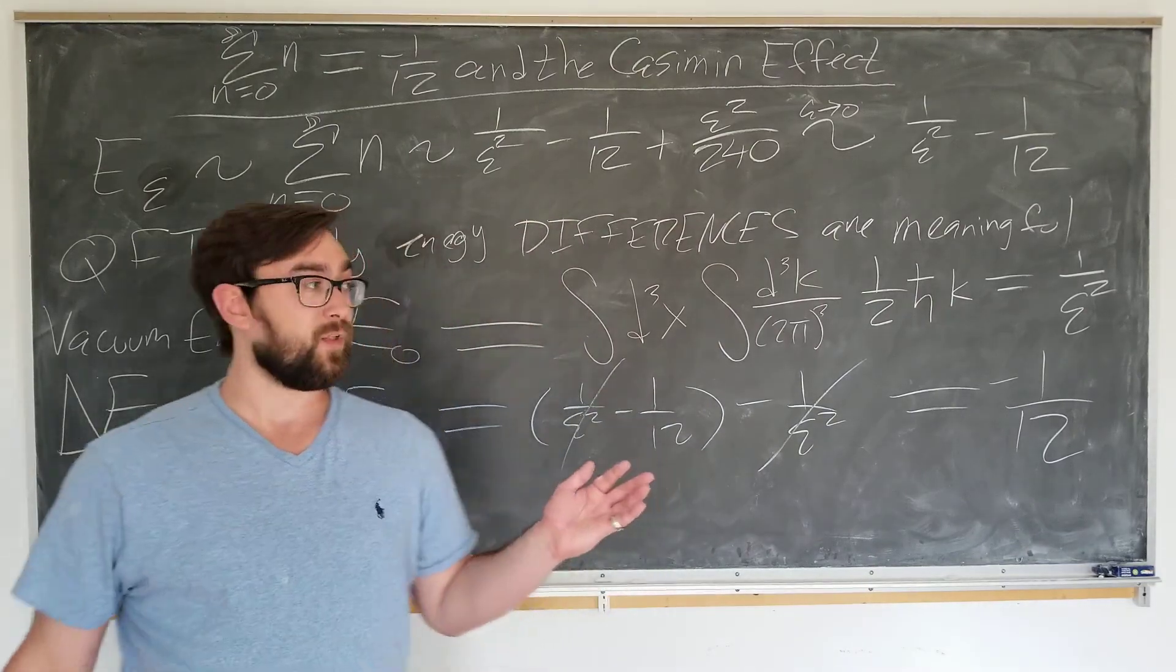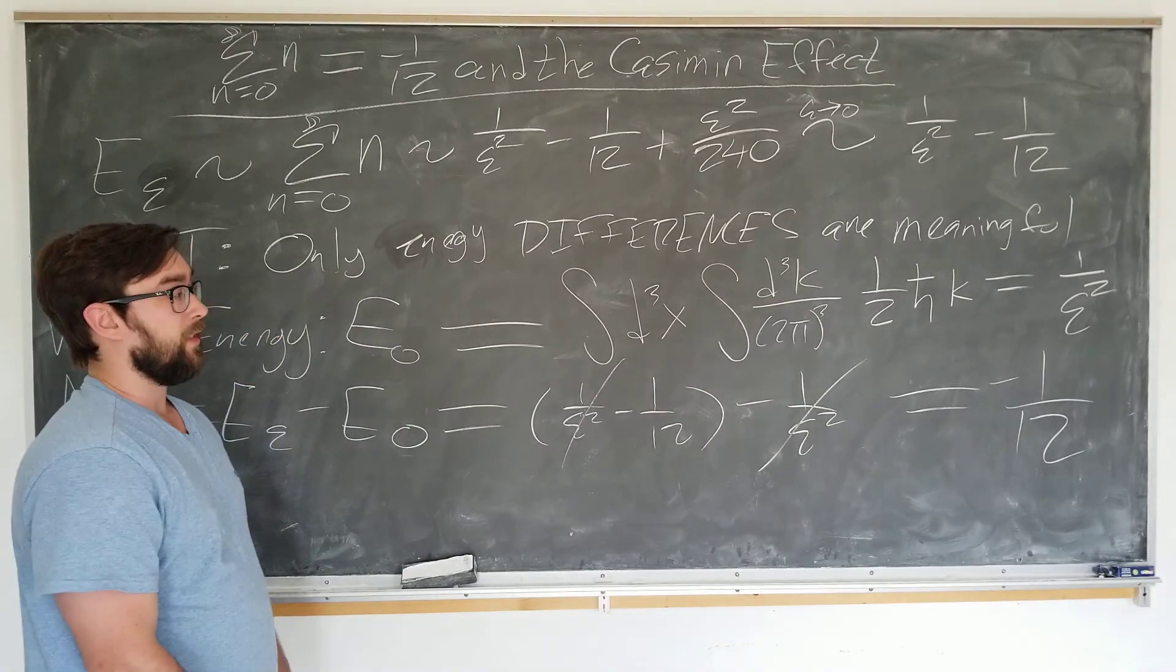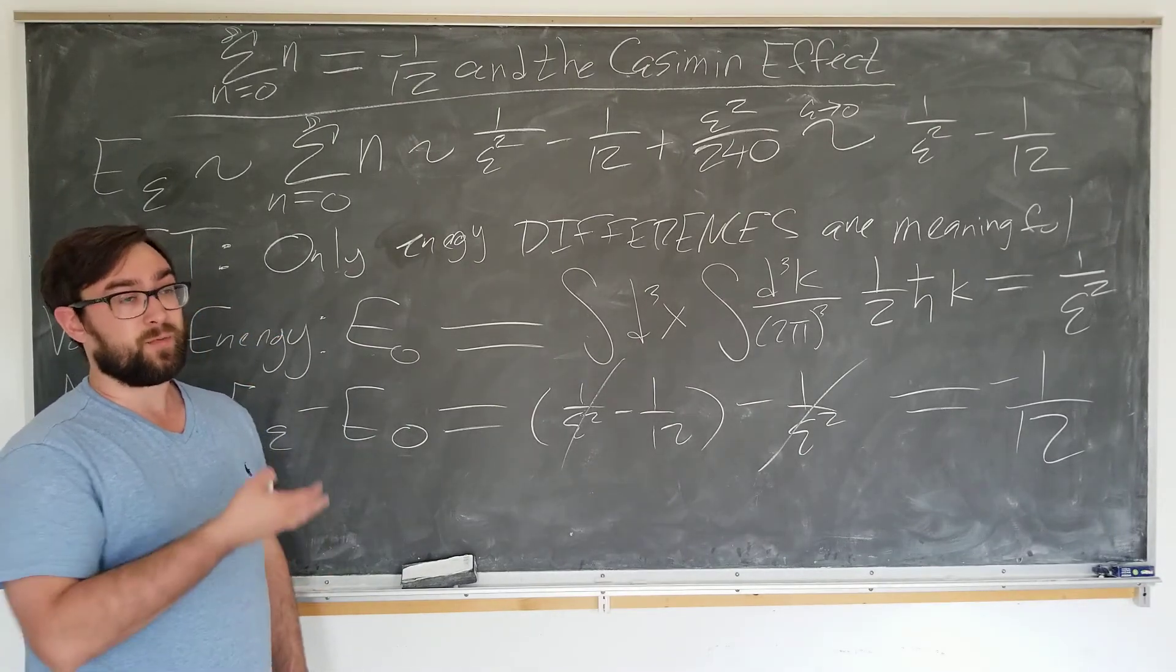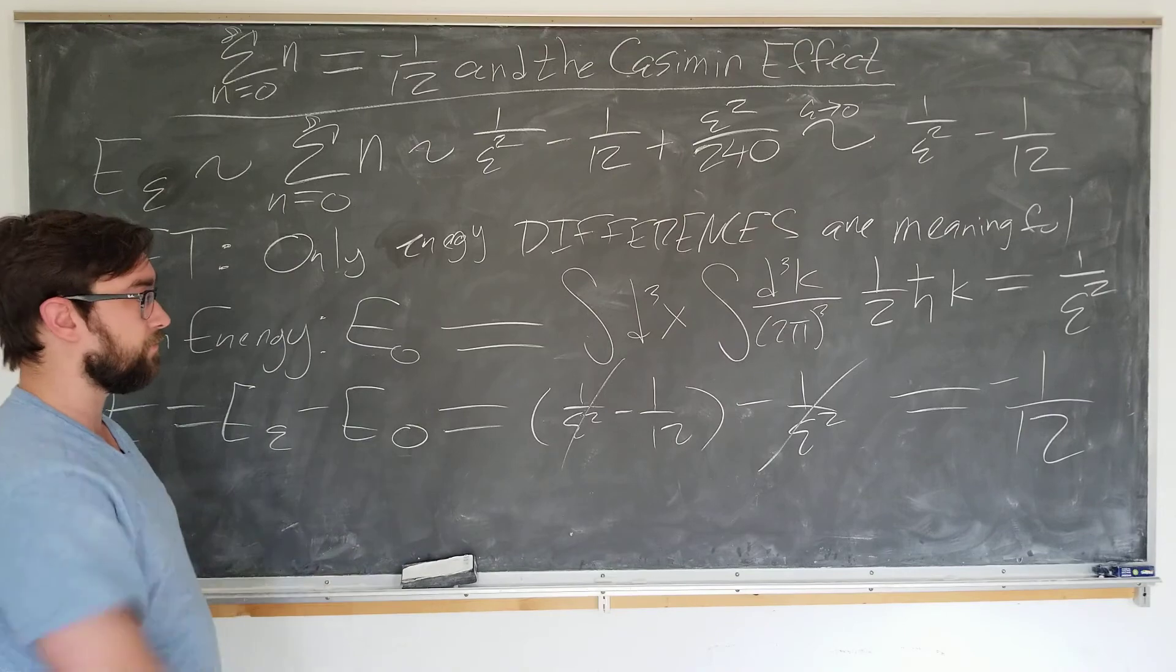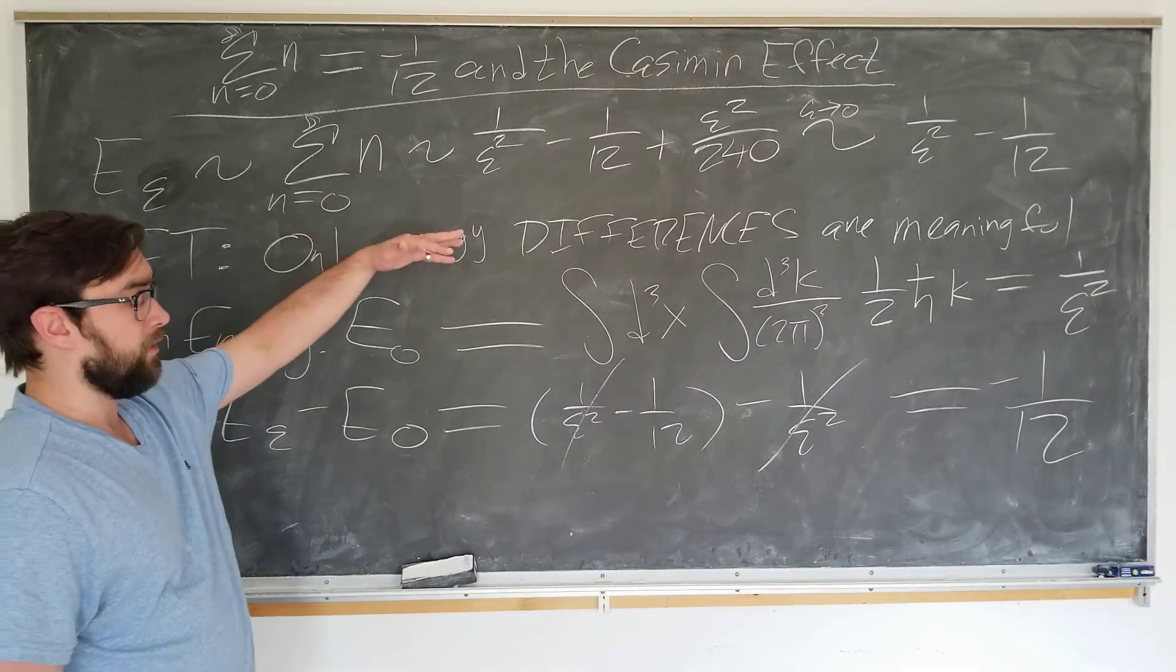Numberphile in particular is the most popular one. They use the zeta function regularization. We just chose the exponential one here since it's simpler. And that's basically the gist of the proof. We've shown what we wanted to show.